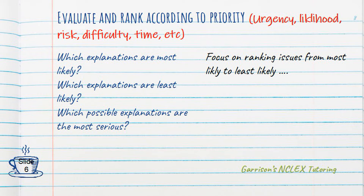When we prioritize hypotheses, we evaluate and rank them according to priority — in other words, urgency, likelihood, risk, difficulty, time, etc. We want to think: what explanations are most likely, what explanations are least likely, and which possible explanations are the most serious for this question? We want to focus on ranking issues from most likely to least likely.